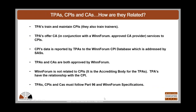How are TPAs, CPIs, and CAs related? TPAs maintain and train CPIs and keep them current for the five-year licensed period. TPAs offer the Certificate of Authority connection. CPIs report the data necessary for the SAS to do their job. TPAs and CAs are both approved by WinForum, but WinForum is not directly related to individual CPIs — it is the accrediting body for the TPAs, and the TPAs have the relationship with the CPIs. All must follow Part 96 and WinForum specifications.